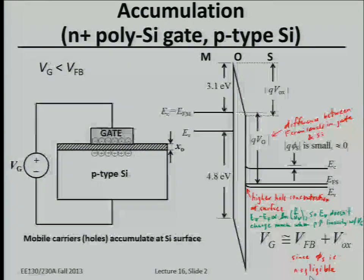Today we'll finish the basics of the MOS capacitor, specifically looking at capacitance formulas. Just to review, we're continuing with the NMOS MOS capacitor — the silicon substrate is p-type. The three regimes: first is accumulation, where the surface is accumulated with majority carriers.